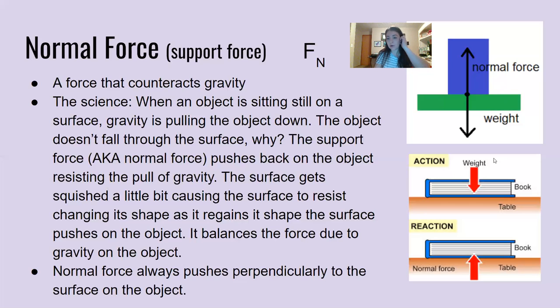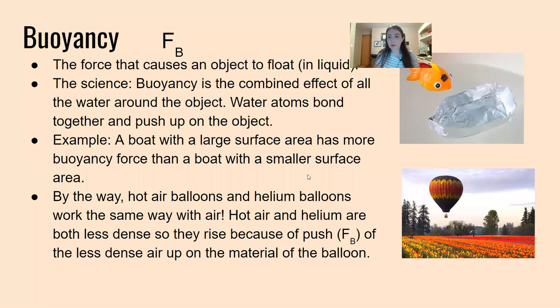Normal force always pushes perpendicularly to the surface. If you're thinking about an object on a surface, the object has a weight dragging it down because of the force due to gravity. The table is providing the normal force up so the book doesn't fall through the table. If you pile enough books on the table, eventually you might break the table. That would be exceeding the normal force of the table pushing back up on the weight of the books. That's why the table breaks. This is Newton's idea that things aren't falling through surfaces because the ground is providing a support force that keeps us up.